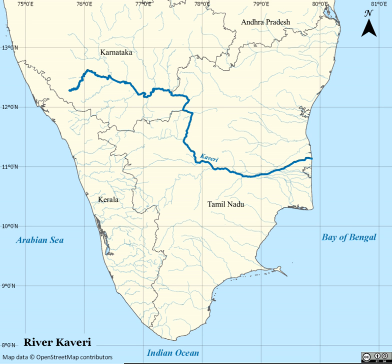The major tributaries of the Kaveri include: Harangi River, Hemavati River, Lakshmana Tirtha, Kabini River, Shimsha River, and Bhavani River.